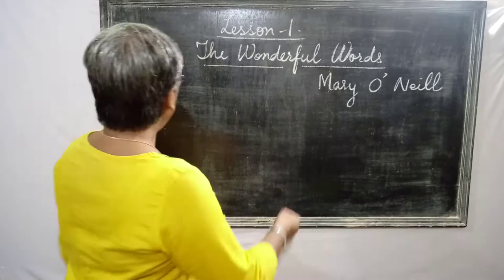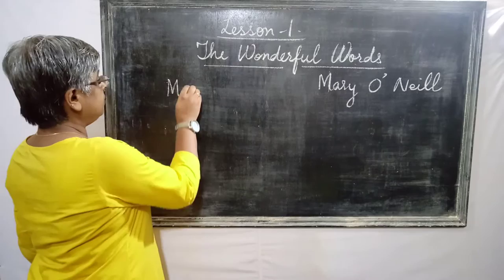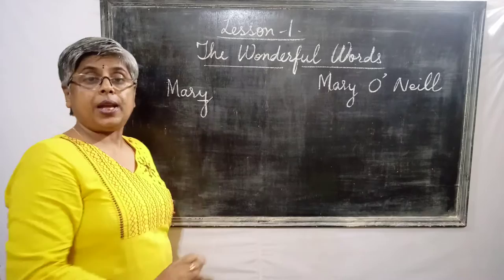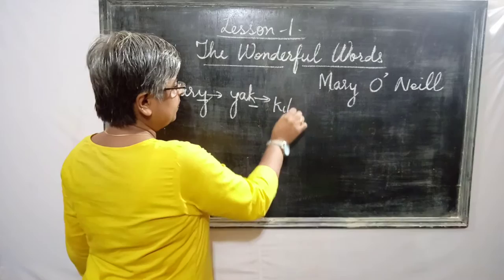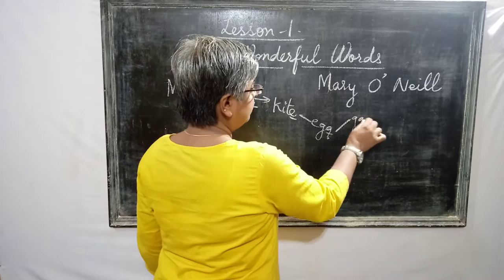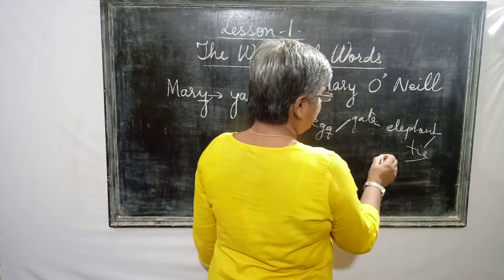I have written a word — let's take the word 'Mary.' We will take the last letter and frame a new word with that last letter. So, Y — we will start the word with Y. Anything like 'Yak,' and it will go on: K — 'Kite,' E — 'Egg,' G — 'Gate,' E — 'Elephant,' T — 'Tie,' E — 'Eagle.' See how many times E is coming.